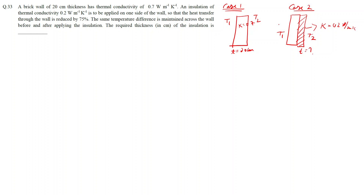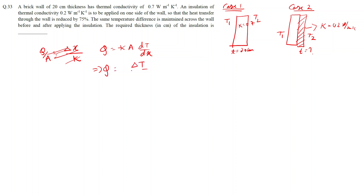The heat flux can be written as Q upon A. The heat transfer is basically minus K times dT upon dx, which we can write in terms of delta T upon delta X divided by K times A. This term we call the resistance R, so heat flux equals delta T upon R.